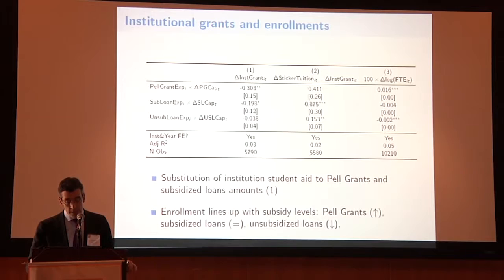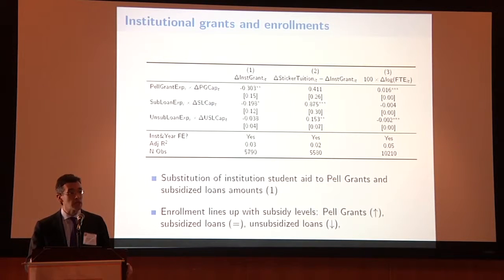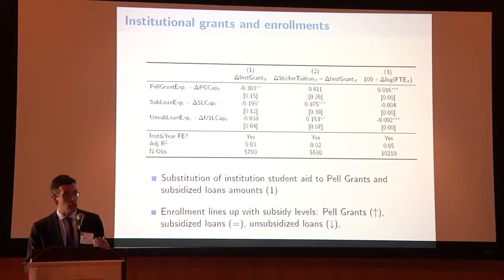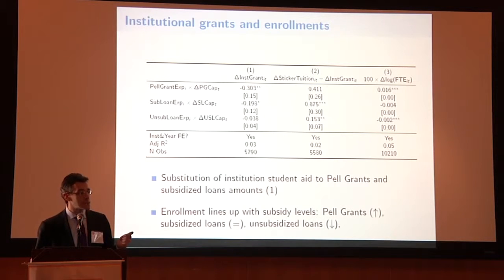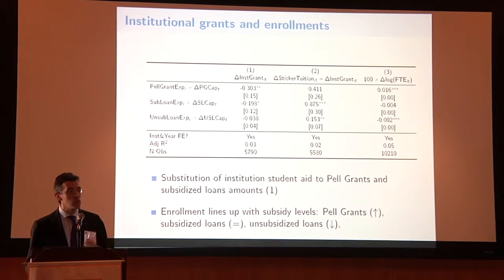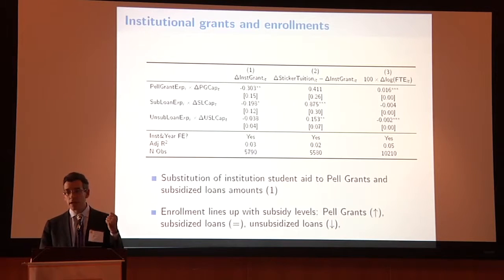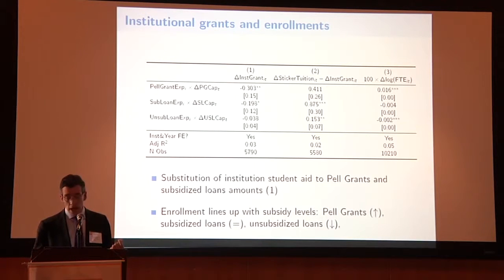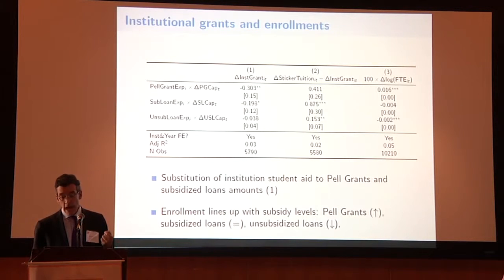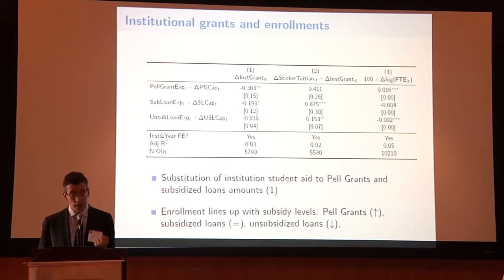Constructing a measure of net tuition and looking at enrollment changes, the enrollment effects line up with the degree of subsidy embedded in each form of aid. For Pell Grants, which are a pure disbursement, you see a positive enrollment effect — students receiving money to go to college increases demand and more students enroll. For unsubsidized loans, the borrowing constraint is relaxed but the net cost of attending also increases, leading to a somewhat negative effect. For subsidized loans, the effect is not significant and somewhere in between.